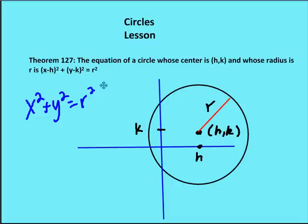Now remember, as we discussed, there's a formula for circles which are not translated — meaning the center is at the origin, or the point (0, 0) — and circles that are translated, meaning their center is not at the origin.